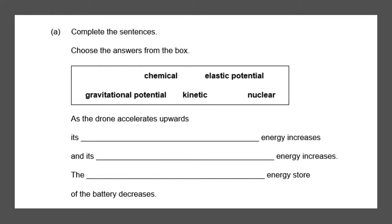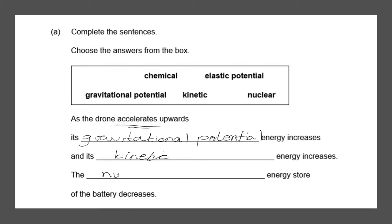Next question. Complete the sentences — choose the answers from the box. As the drone accelerates upwards, it's getting off the ground, so one of the answers is going to be gravitational potential energy, which increases. Something else also increases, and the word 'accelerates' gives us the clue — it means it's going at a really quick speed, so we know it's going to be kinetic. And the something energy store of the battery decreases. Because it's associated with a battery, we know it's going to be nuclear energy. Elastic potential is something that's being stretched, so it must be nuclear. And that will give you three marks.